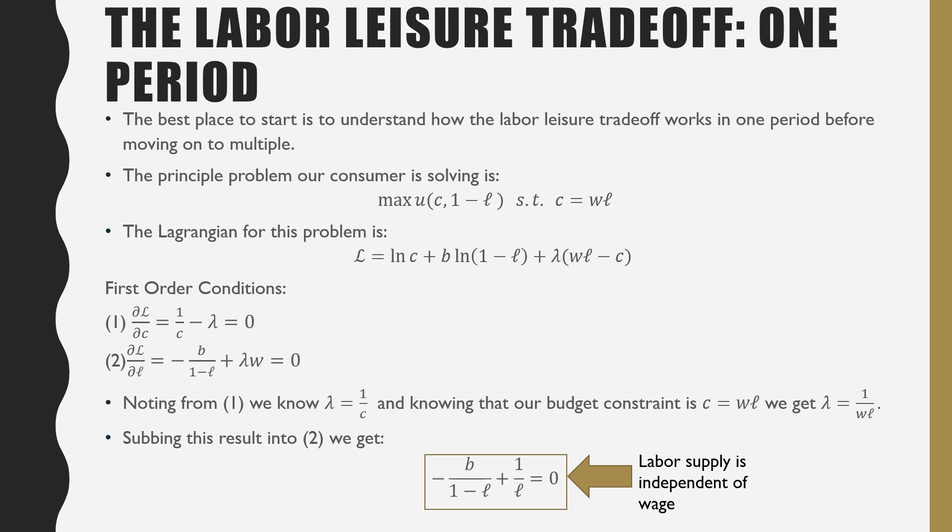The best place to start to understand the labor-leisure trade-off is to first understand how it works in one period before moving on to multiple. The principal problem of our consumer is to maximize their instantaneous utility function